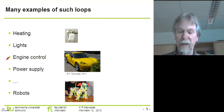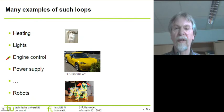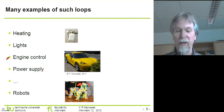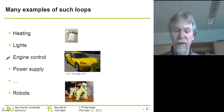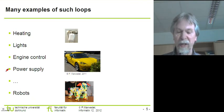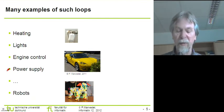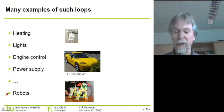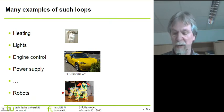We also have examples of such loops in engine control in the automotive domain. There, sensors measure certain values in the engines, then there is complex information processing to make sure the engine runs as smoothly as possible, and the resulting values have an impact on, for example, the amount of gas injected into the engine. We have a similar case for power supplies — measuring voltages and controlling the amount of electricity available so that the result is a stable voltage. Finally, robots also have a number of sensors, some information processing, and actuators impacting the physical environment.